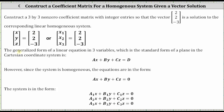A generalized form of a linear equation in three variables, which is the standard form of a plane in the Cartesian coordinate system, is ax plus by plus cz equals d. But we also know the system is homogeneous, and therefore d is equal to zero, which means all three equations are in the form ax plus by plus cz equals zero.